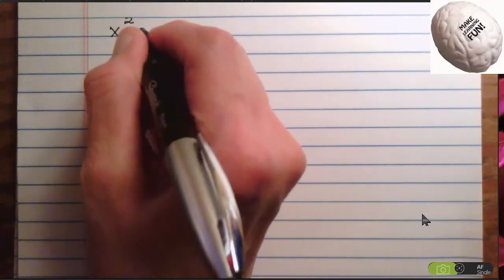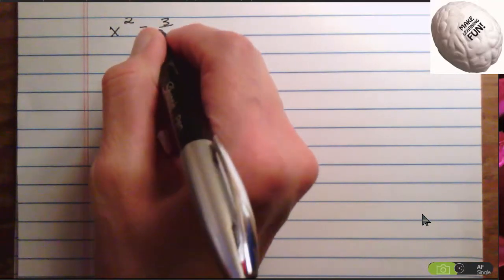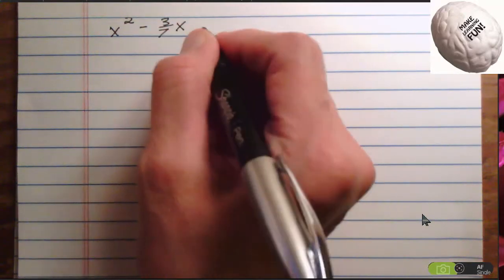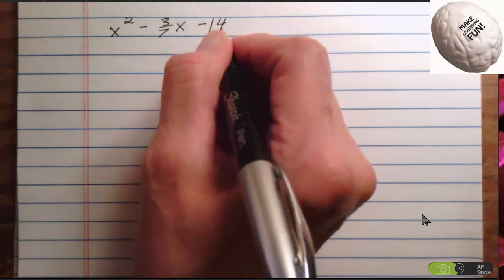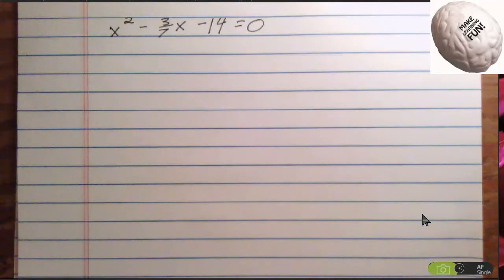Okay, now let's try this. x squared plus 3 sevenths x minus 14 equals 0. I have no idea what that answer is going to be. I might have just created the very worst math problem in the world. But let's see.